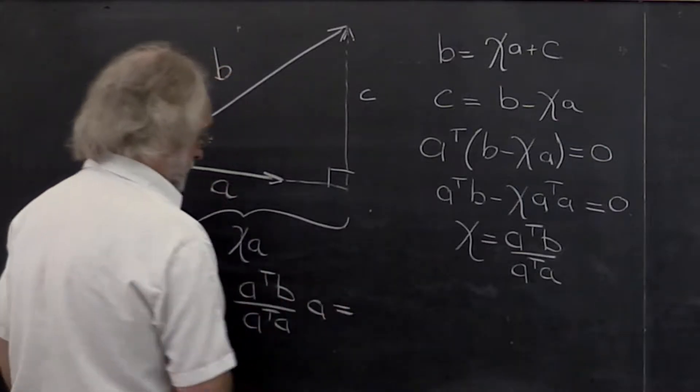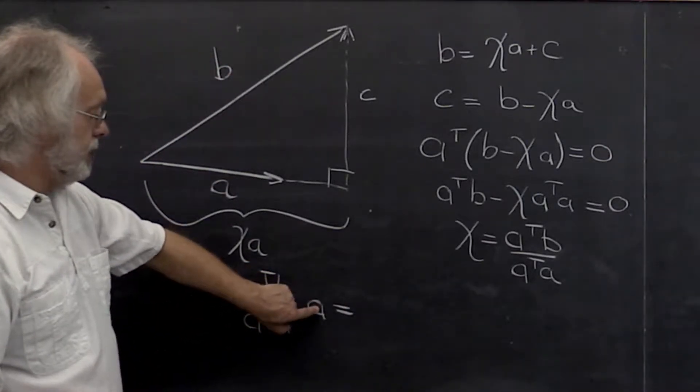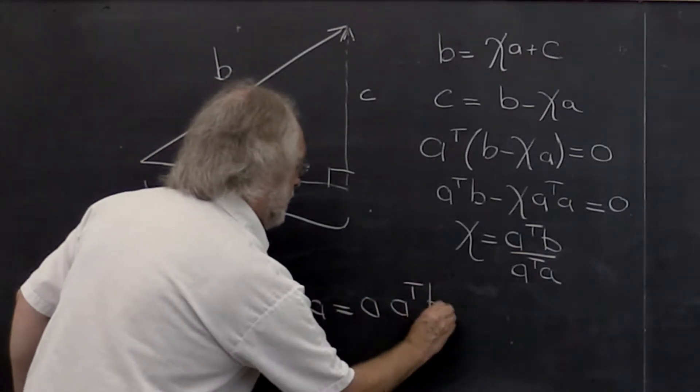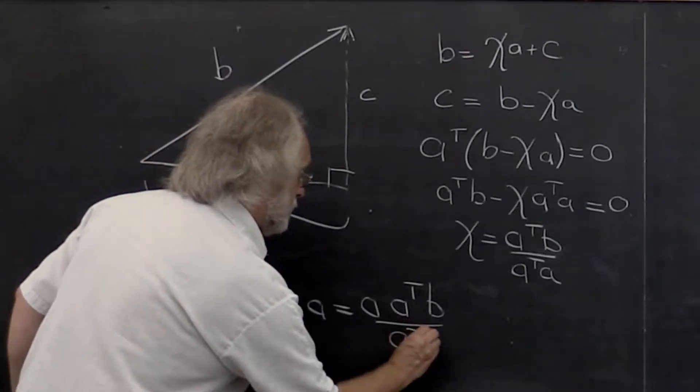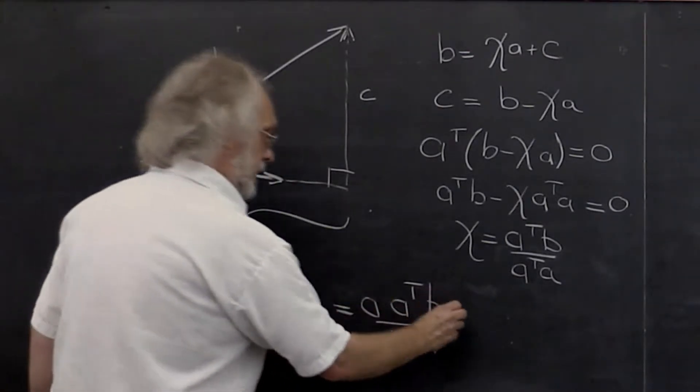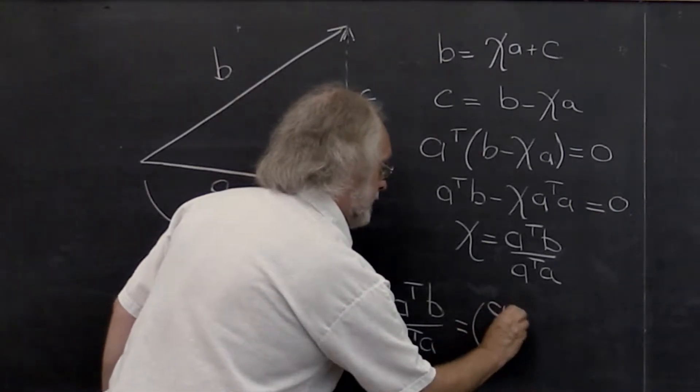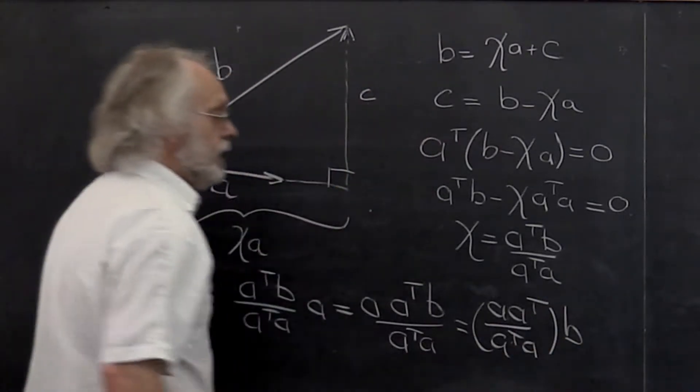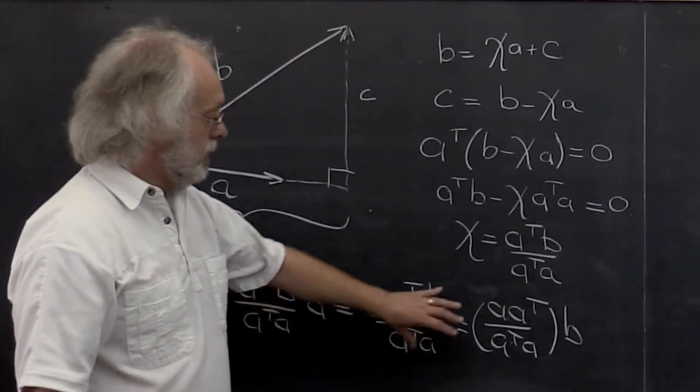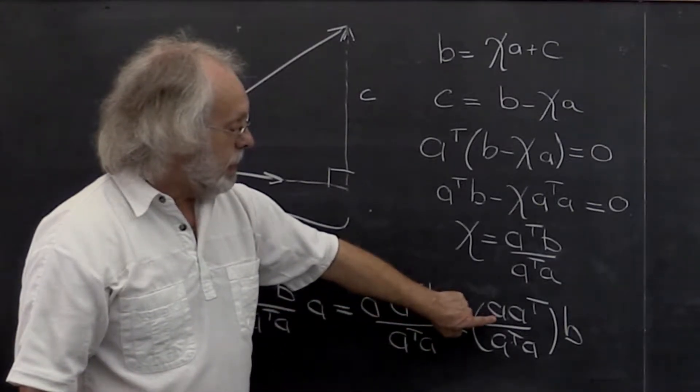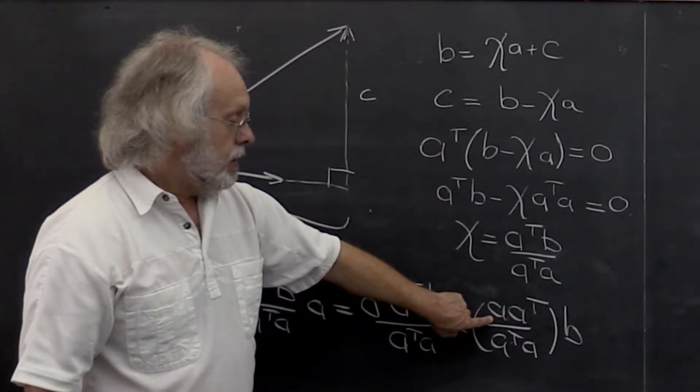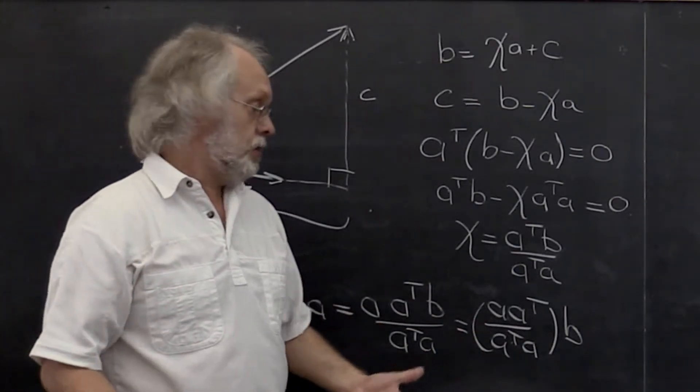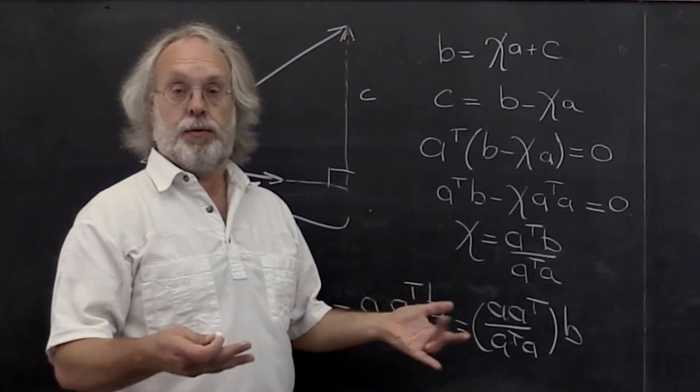Which we can then rearrange as—a scalar times a vector is the same as a vector times a scalar—so we get A times A transpose B divided by A transpose A times B. And why do I like that so much? Because this tells me what the matrix is such that when I apply it to any vector, I get the component of that vector in the direction of A.